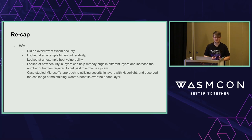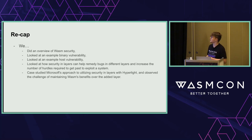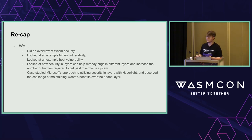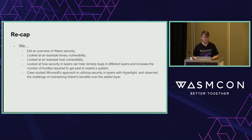Before opening for questions, a quick recap: we started with an overview of Wasm security, discussing sandboxing and linear memory. Next, we looked at binary security and a vulnerability there. Then we looked at host security and a vulnerability there. We saw how security in layers is our proposed solution to counteract bugs across layers of the stack. And at the end, our case study in Microsoft's approach with Hyperlite, showing the challenges of maintaining Wasm's benefits while adding more security on top.